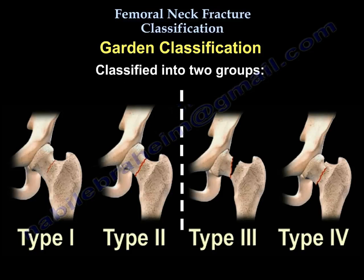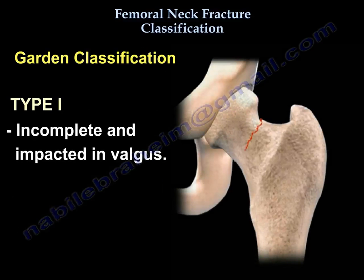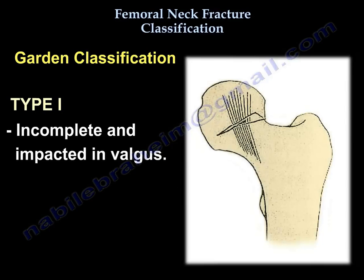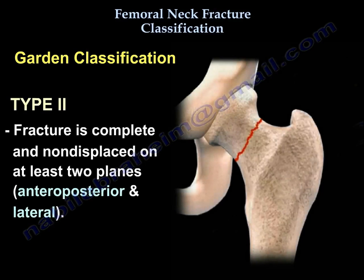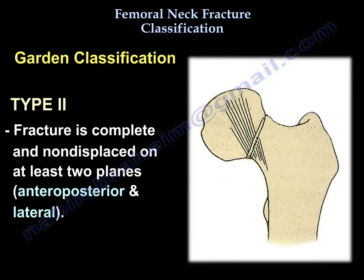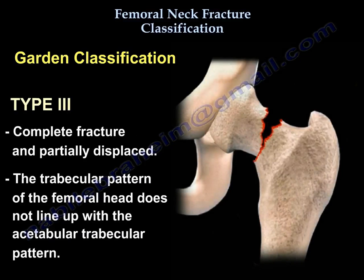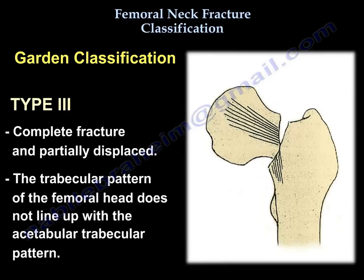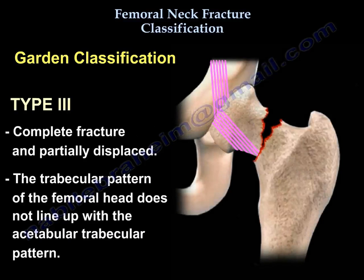Garden's classification divides fractures into two groups: non-displaced (Type 1 and Type 2) and displaced (Type 3 and Type 4). Type 1 is an incomplete fracture impacted in valgus. Type 2 is complete and non-displaced on at least two planes — the AP and the lateral. In Type 3, the fracture is complete and partially displaced, and the trabecular pattern of the femoral head does not line up with the acetabular trabecular pattern.